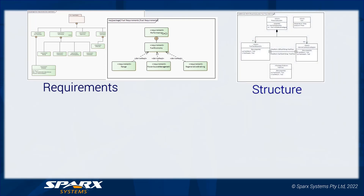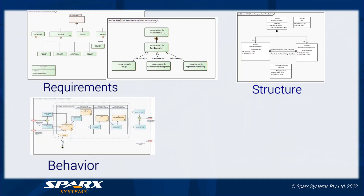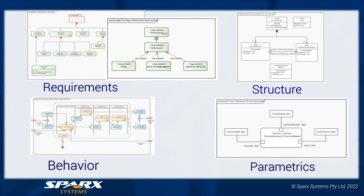Then we have the structural models: the block definition diagrams, the internal block and constraint block diagrams. In this case, a block definition view of the power system fuel flow and its relation to the fuel tank assembly. Then we have the behavioural models, which includes activity, state machine and interaction diagrams. In this case, we have an activity diagram looking at the power fuel flow in the car. And finally, we have the parametric diagrams that cover the interaction or mathematical formula and the parameters that feed it.